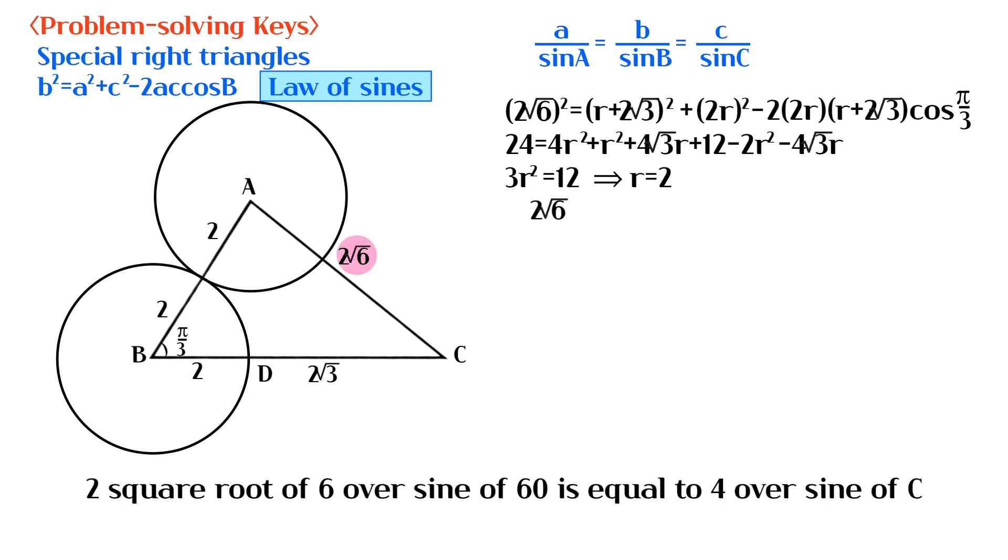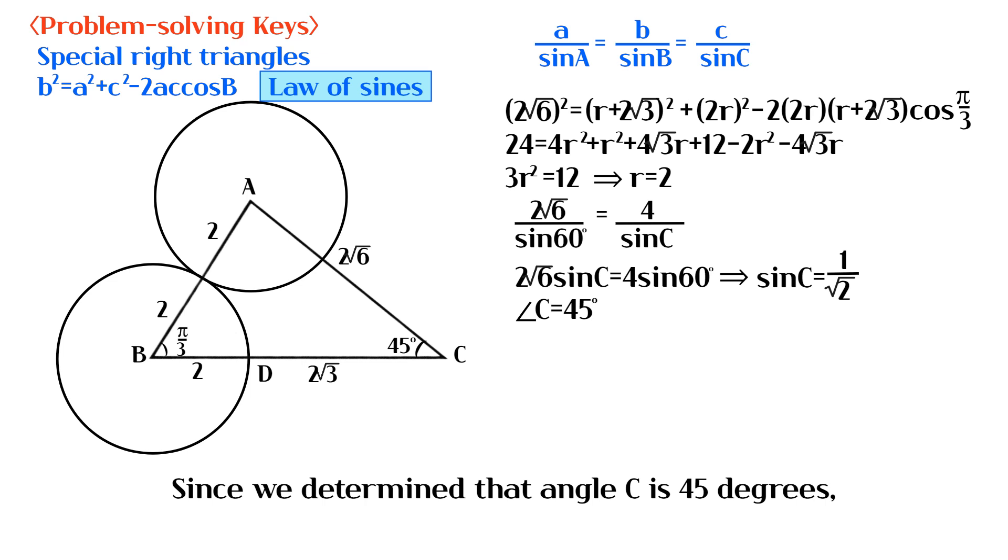2√6 over sine 60° equals 4 over sine C. Since we determined that angle C is 45 degrees, angle A must be 75 degrees.